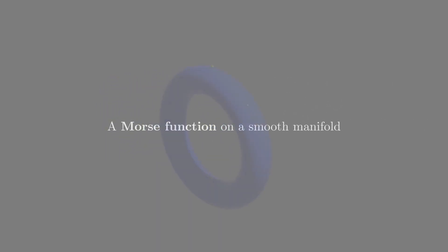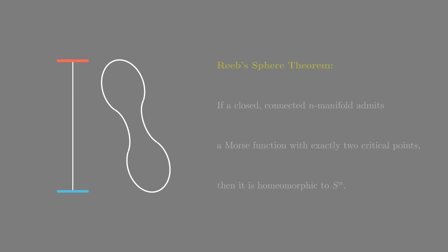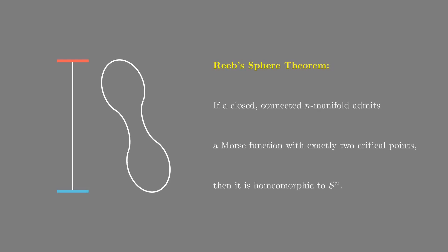Smooth functions over a smooth manifold like this, whose critical points are all non-degenerate, are called Morse functions. Furthermore, Reeb's theory tells us, if a manifold admits a Morse function with exactly two critical points, one minimum and one maximum, then the manifold must be a topological sphere.